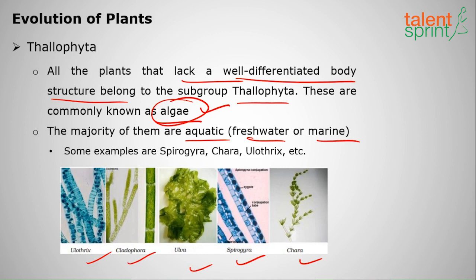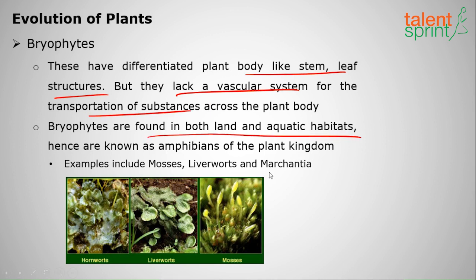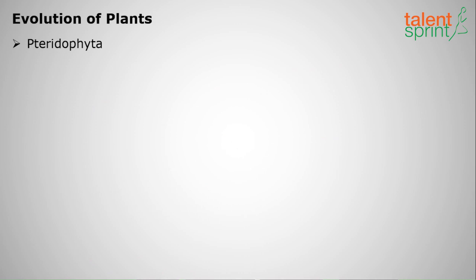Bryophytes don't have a perfect vascular system — they lack xylem and phloem. Though they have well-differentiated plant body parts like stems and leaves, they lack a vascular system for transportation of water, minerals, and food. Bryophytes are found in both land and aquatic habitats. Examples are liverworts, mosses, and hornworts.